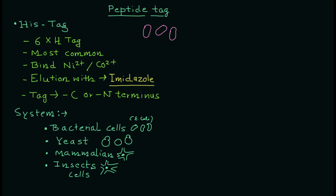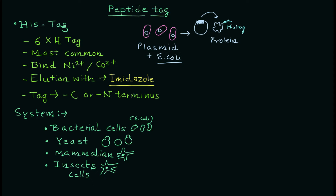Let's take the example of E. coli cells. E. coli cells work with a specific plasmid — a vector carrying your gene of interest. You can incorporate the histidine tag into the protein or use a plasmid that already encodes it. Once the protein is translated, it will have the histidine tag attached, encoding 6 to 12 histidine amino acids as a tail on your protein.